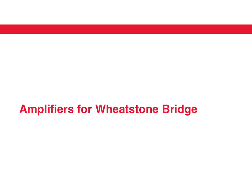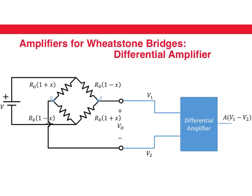In this video we are going to look at amplifiers for the Wheatstone bridge. The way the Wheatstone bridge works is we need to take the difference in the voltages at point A and B. The basic circuit to take a difference is a differential amplifier, which takes a difference, amplifies it, and gives an output.